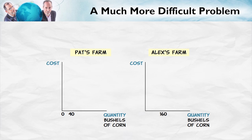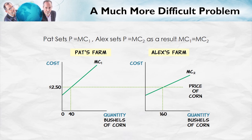Now let's consider a much more difficult problem. Suppose we have Pat's farm on the west coast and Alex's farm thousands of miles away on the east coast, and no one knows the marginal cost on both of these farms. The problem looks almost impossible — how could we possibly allocate production across these two farms to minimize total costs when no one knows the marginal cost on both farms? Clearly, a central planner would not have enough information to solve this problem. And yet, the market does solve the problem. Because even though nobody knows the marginal cost on both farms, Pat knows the marginal cost on Pat's farm, Alex knows the marginal cost on Alex's farm, and both of them know the price of corn.